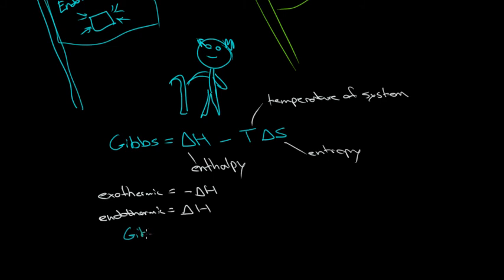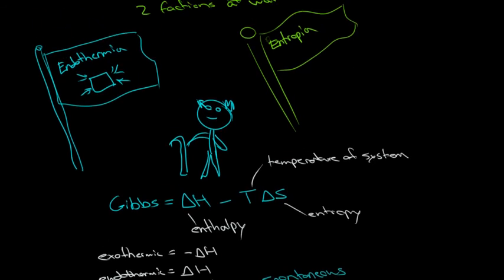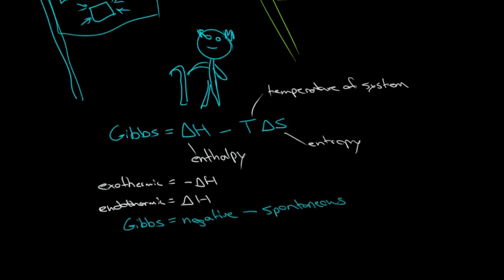The Gibbs energy, if Gibbs is negative, then the process is spontaneous. That means that probably in this case the entropy would have won out over the endothermia, or entropia. And so the converse is true. If Gibbs is positive, it's likely to not be spontaneous.